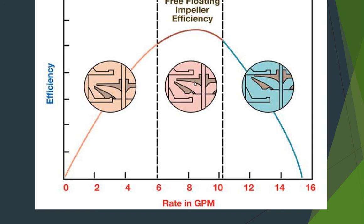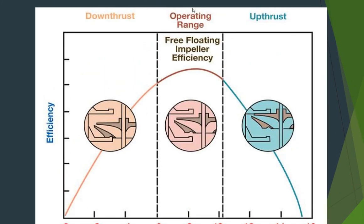In between these two regions we have a floating impeller, so we have maximum efficiency between these two regions. We try to operate our ESP pump in between these two flow rate extremes to achieve maximum efficiency. The region where the flow is lower and the impeller is going downward is called down thrust, and the other region is called up thrust.